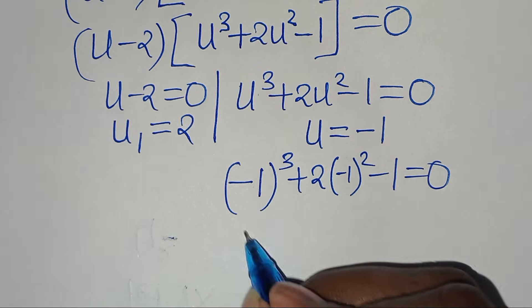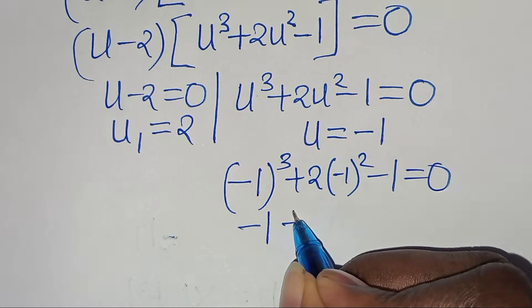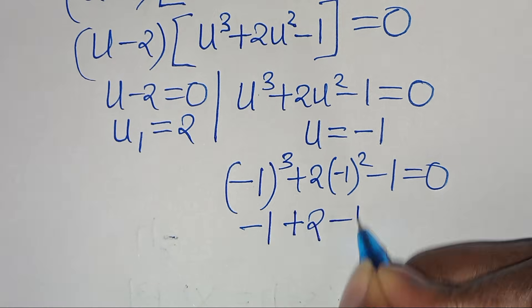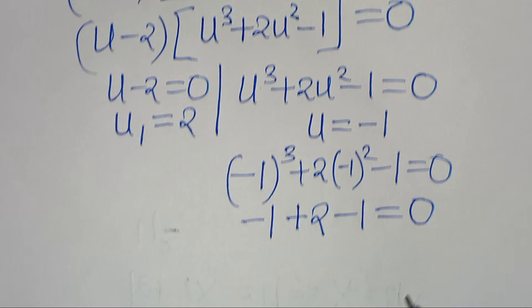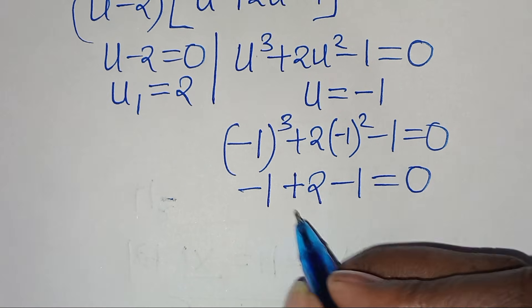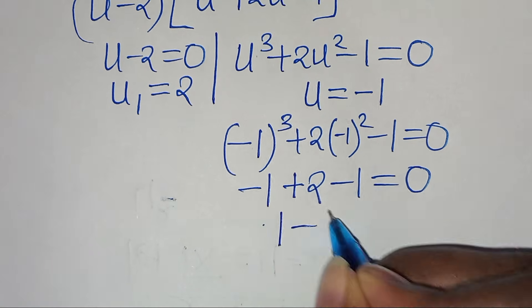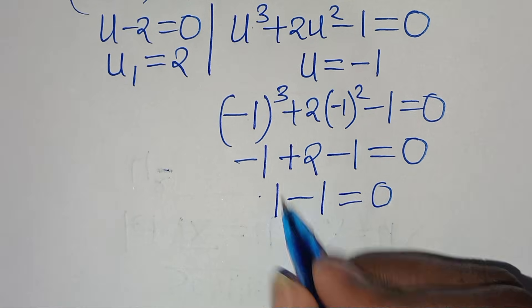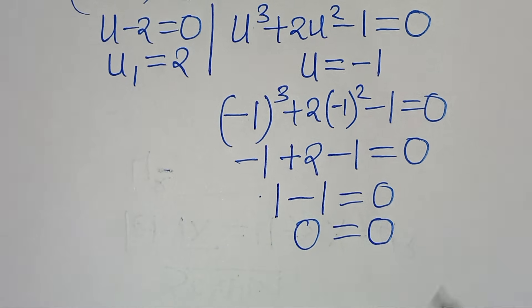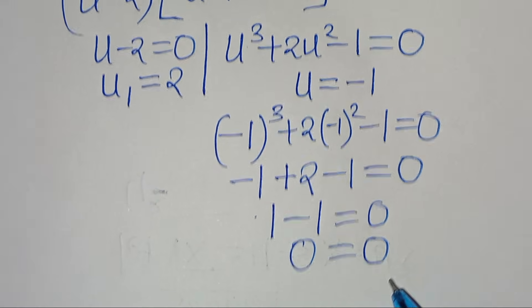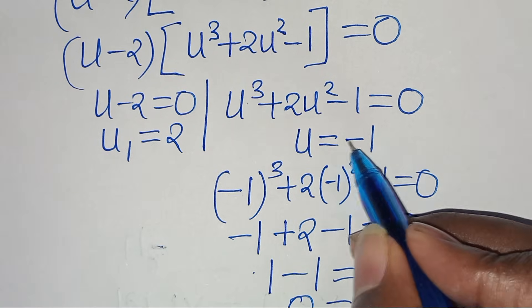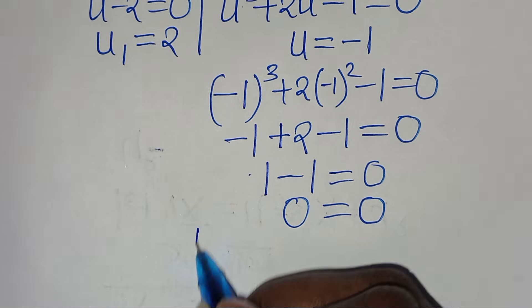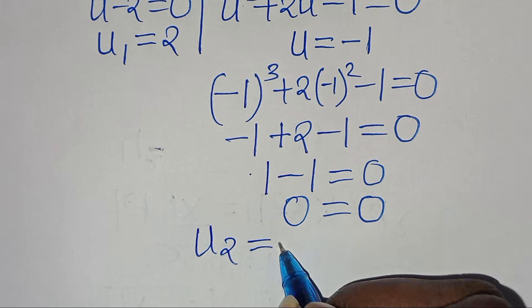So minus 1 to the power of 3 is minus 1, then plus (minus 1 squared which is 1, times 2) is 2, then subtract 1. This gives us minus 1 plus 2 minus 1, which equals 0. So u equal to minus 1 is the second value of u, so u₂ is equal to minus 1.